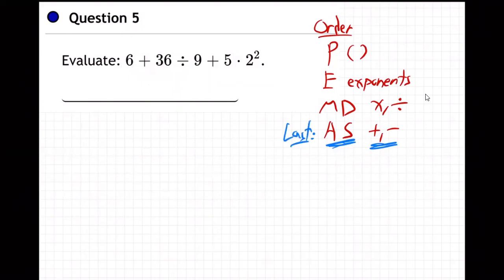So I can't add these. That's last. Instead, you have to do other things first, like do this power. So 2 squared is 4. Right? So do that, because exponents are way up here, a higher priority.